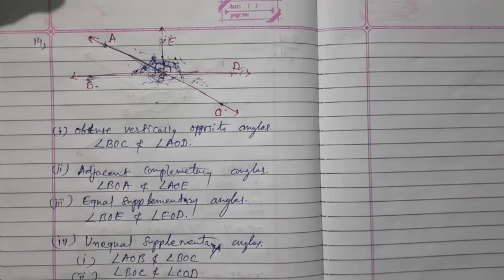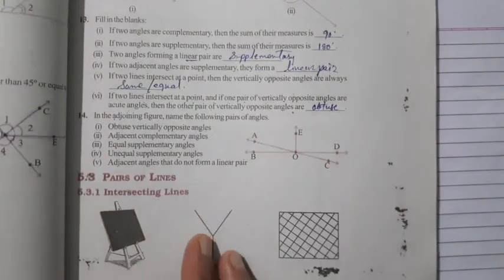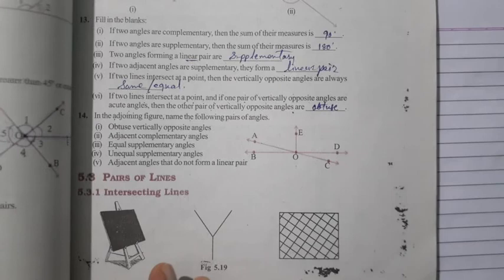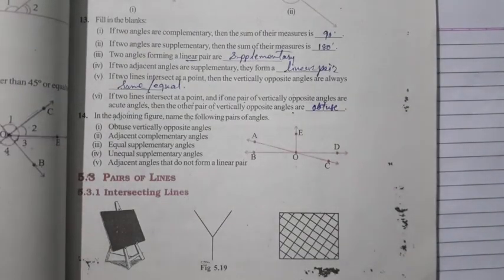These are the pairs of angles. Here our exercise 5.1 is completed. You just complete 5.1 in your notebook. Thank you.